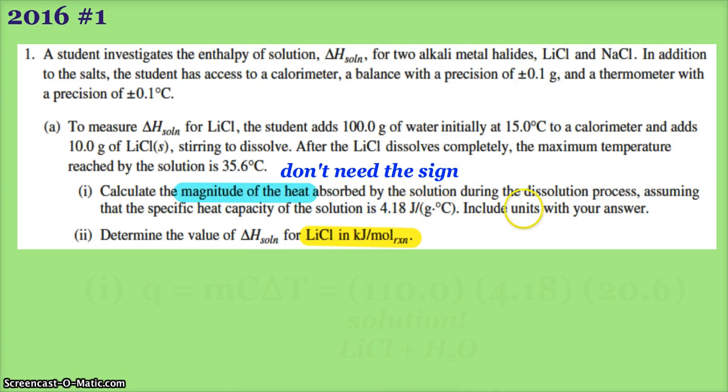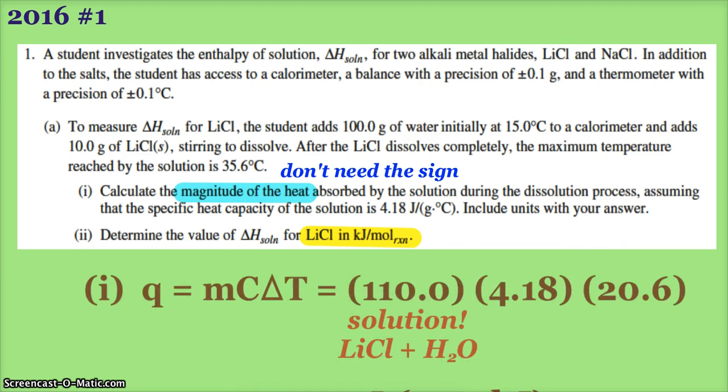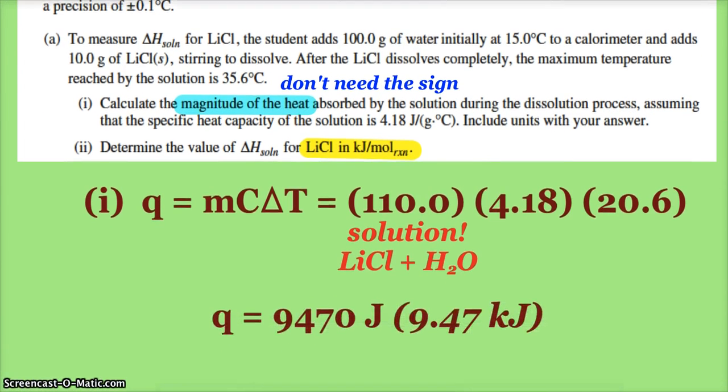We see 4.18 for heat capacity of the solution. When we calculate q, it's typically joules. So q equals mc delta t. My m is 110 because I added the 100 grams of water plus the 10 grams of lithium chloride, and my delta t was 20.6°C. So I get 9470 joules based on my three sig figs in the 20.6 delta t, or if you wanted, 9.47 kilojoules.